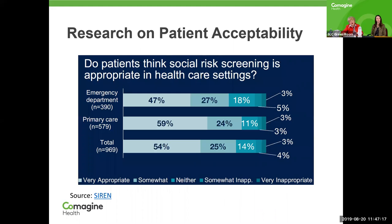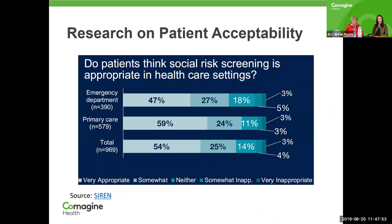One key point is how patients feel when screened for social determinants of health — do they feel comfortable with it? This chart shows that patients do think screening for social risk is very appropriate in healthcare settings. The light blue shows very appropriate: emergency department 47%, primary care almost 60%, and the total out of 969 respondents is 54%. When you add somewhat appropriate as well, the vast majority of patients think social risk screening is appropriate, and they're very receptive to it in the ED and in primary care settings.